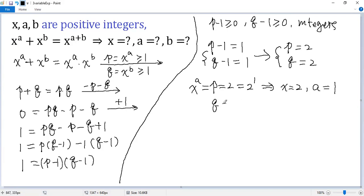Similarly, q equals 2, but q equals x to the power of b, and 2 can be written as 2 to the power of 1. So we get x equals 2, b equals 1.